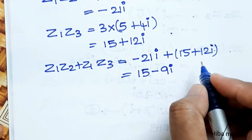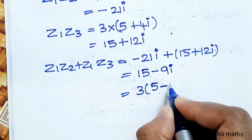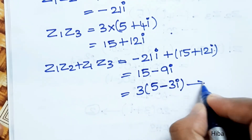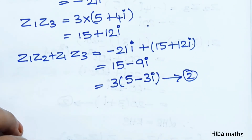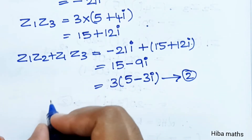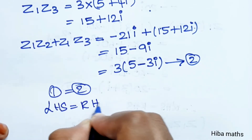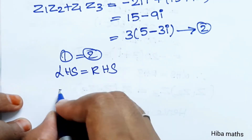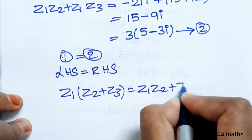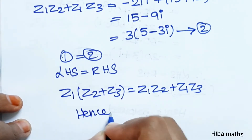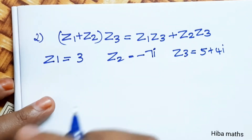So both LHS and RHS equal 15 minus 9i. Since equation 1 equals equation 2, LHS is equal to RHS. Therefore z1 into z2 plus z3 is equal to z1 z2 plus z1 z3. Hence proved.